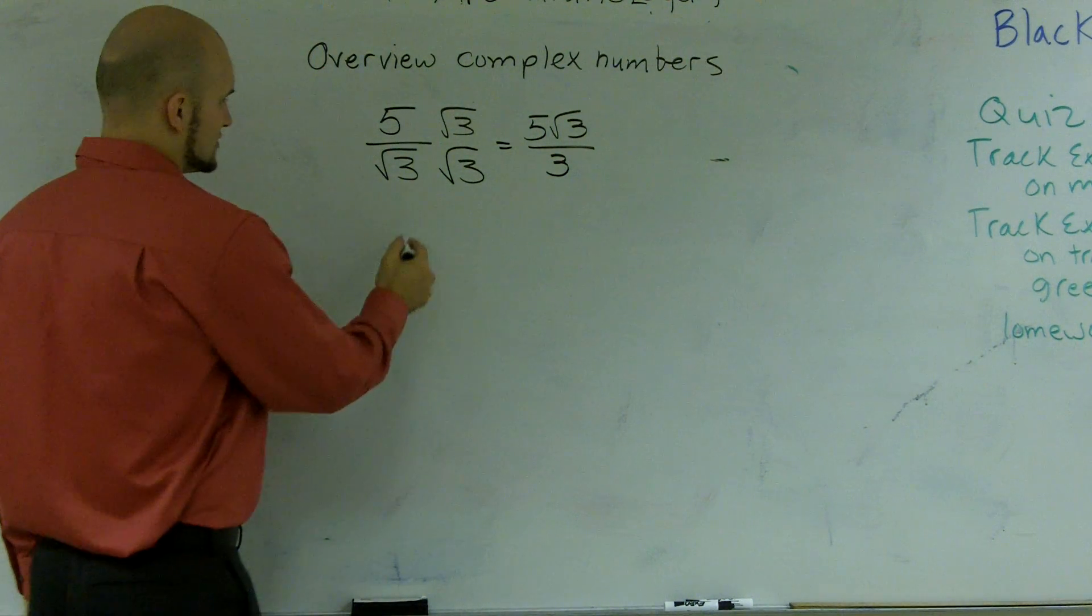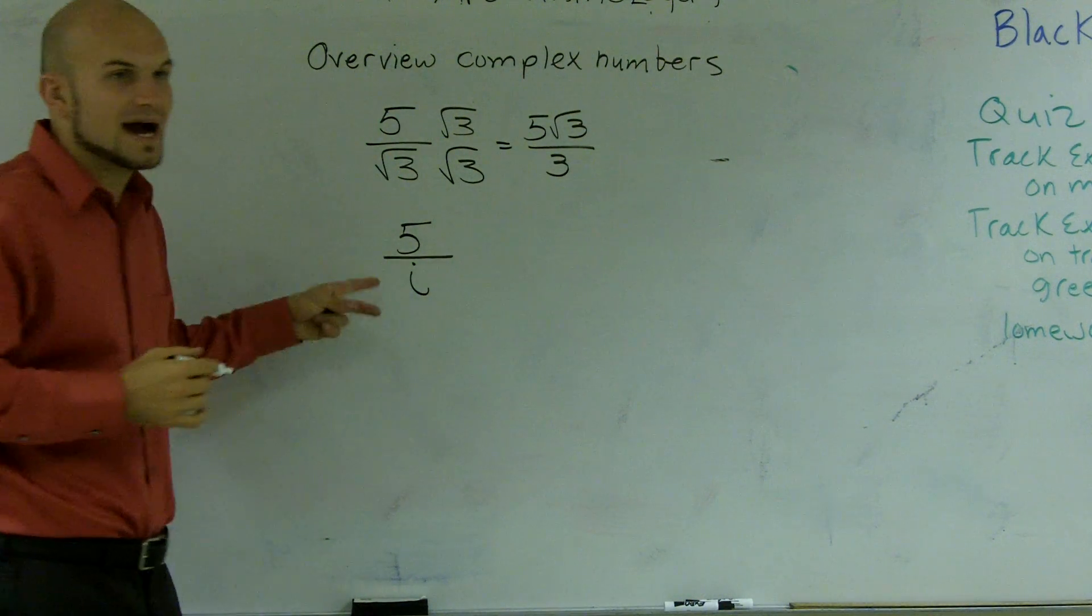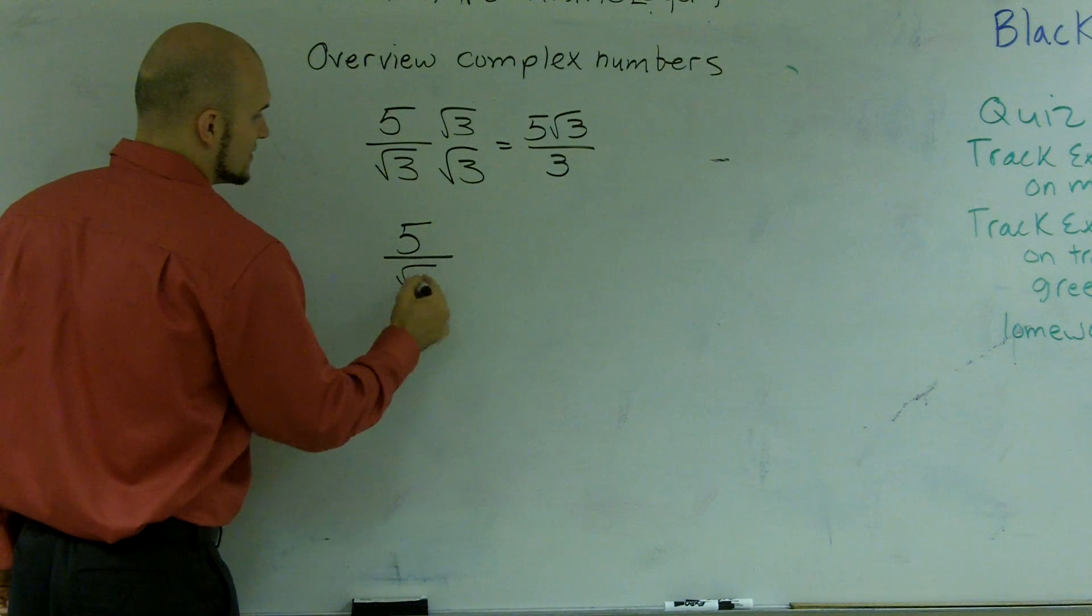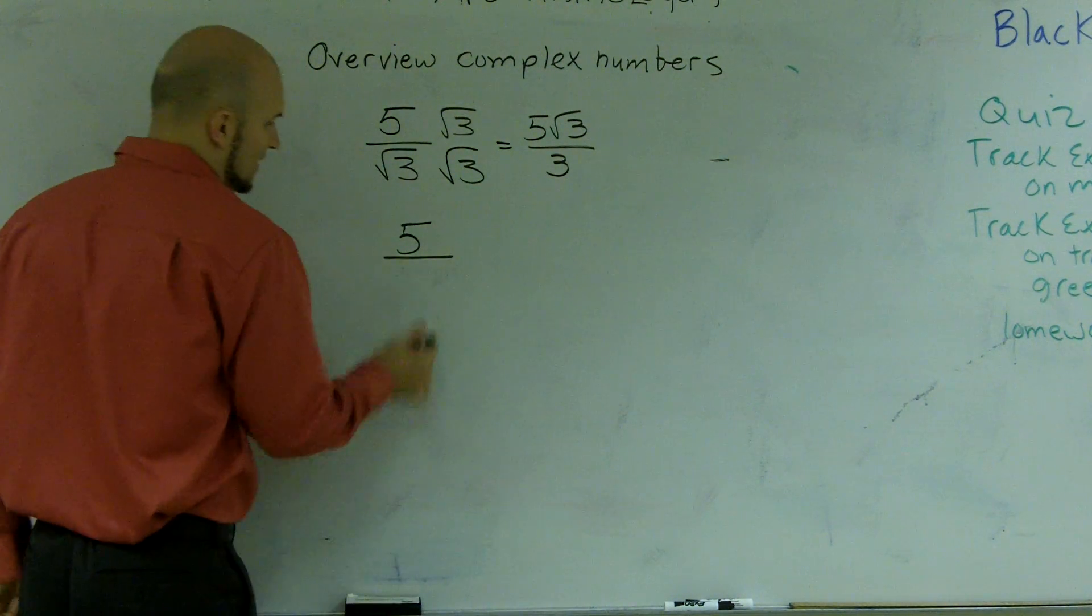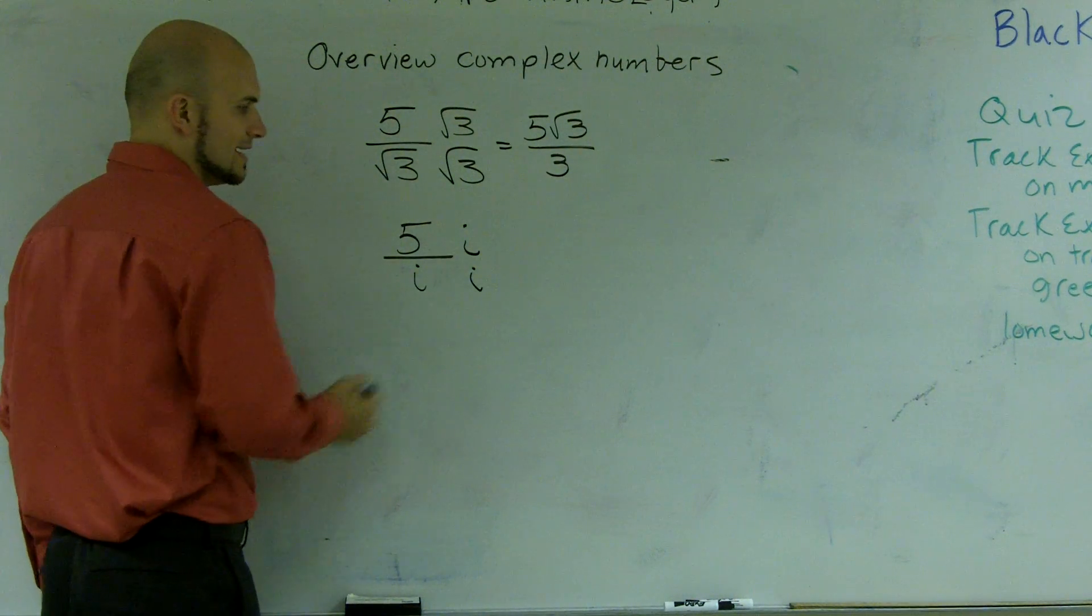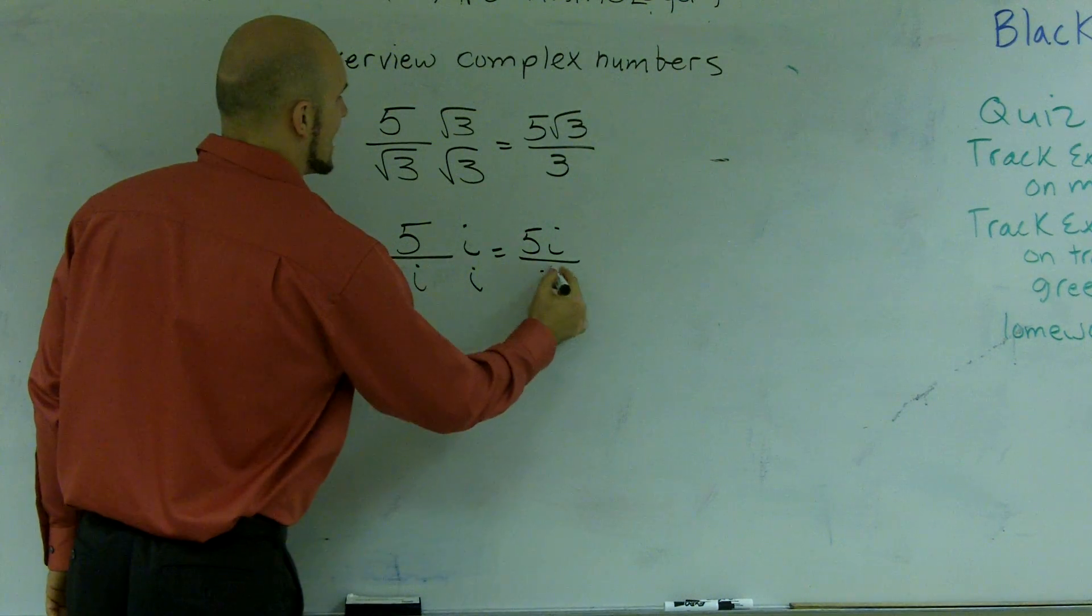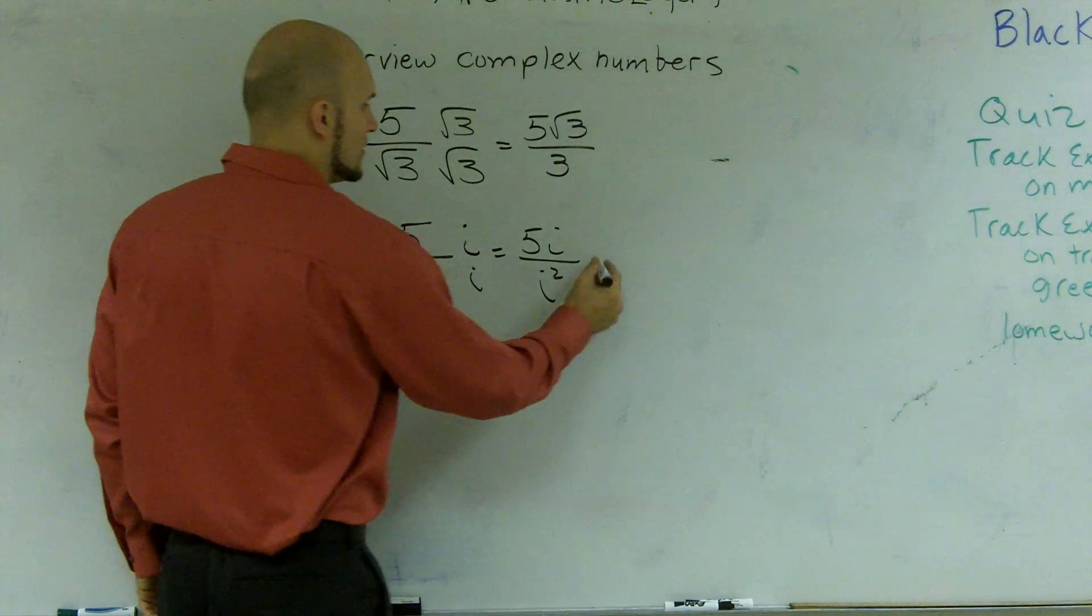Well, the same thing is true for i. You can't divide i into a number. It's also, remember, i is like the square root of negative 1. We can't divide by the square root of negative 1. So, to get i off the bottom, you're going to have to rationalize with i. So, therefore, you get 5i over i squared. And remember, earlier, I said i squared equals negative 1.